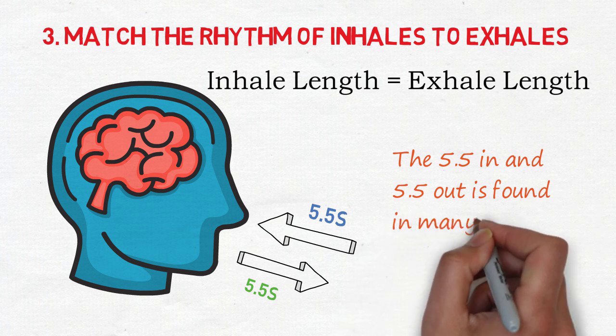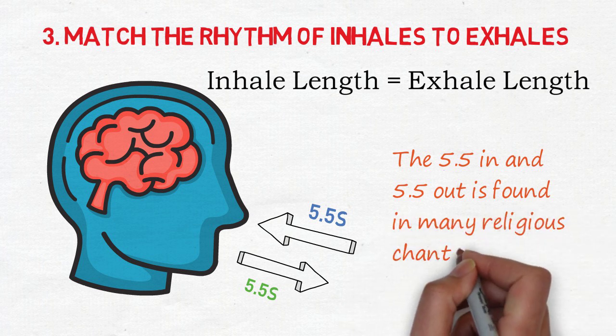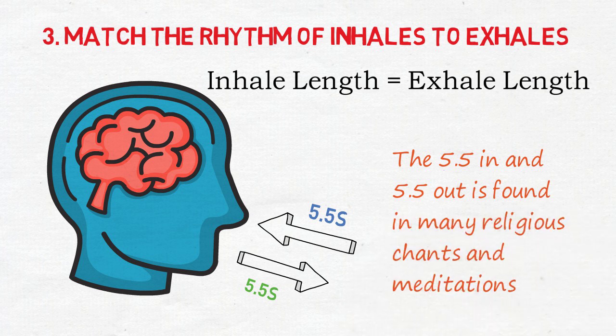The most common symmetrical breathing pattern James found was 5.5 seconds in and 5.5 seconds out. Interestingly, this also translates to about 5.5 breaths per minute. This breathing pattern was found in many different eras and cultures throughout human history.